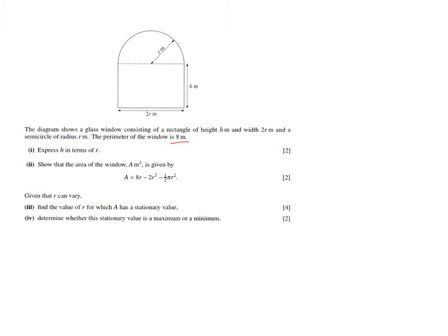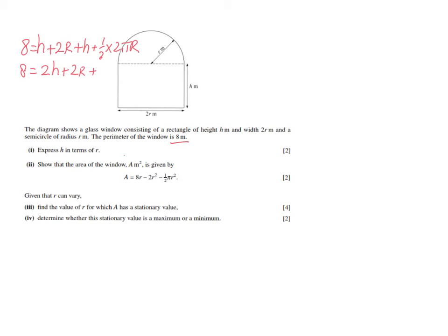The perimeter is the sum of the lengths on the outside. Adding those lengths together should equal 8. So: 8 = h + 2r + h (the rectangle sides) plus half the circumference of the circle because it's a semicircle, giving half times 2πr. Simplified, that is 2h + 2r + πr.